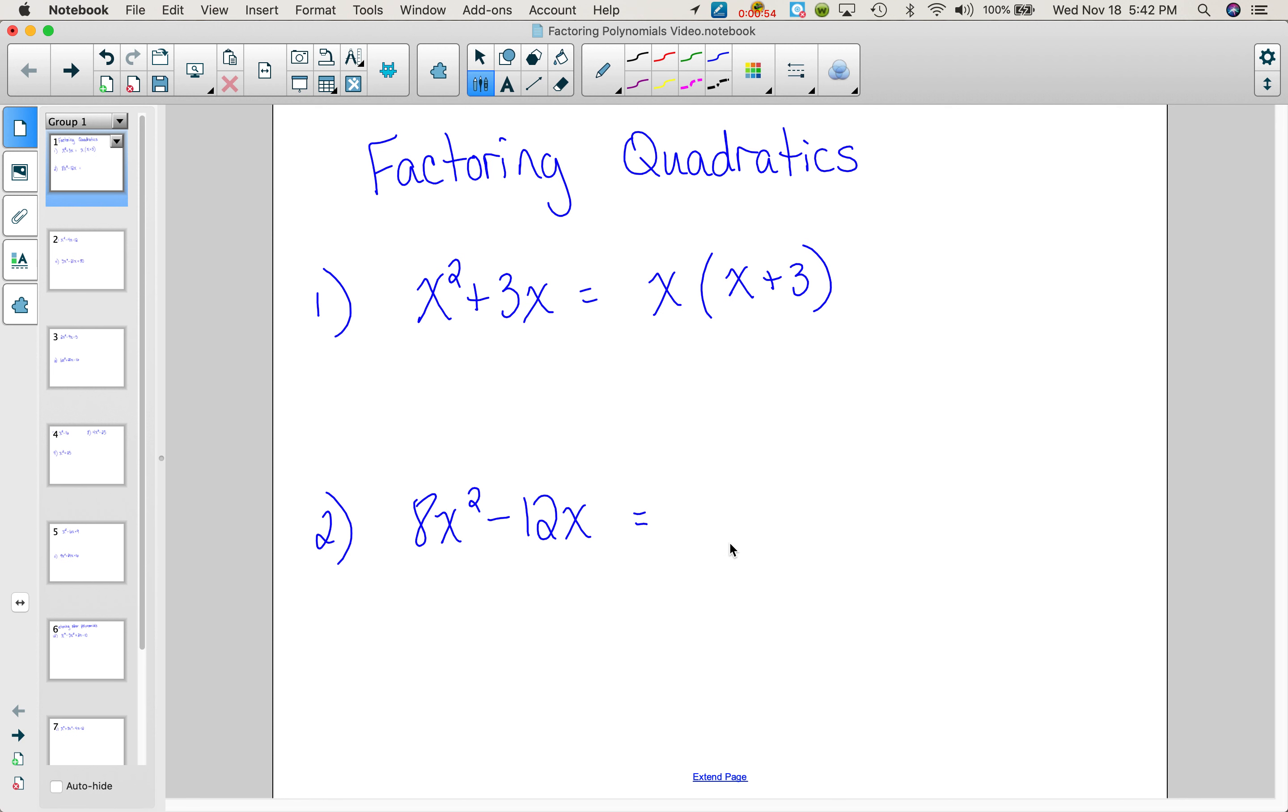Here, is there a GCF? Yes. Look at the numbers. I can factor out a 4, and the variables, I can factor out an x. I'm left with 2x minus 3. You can always check this with the distributive property. 4x times 2x is 8x squared, 4x times negative 3 is negative 12x.